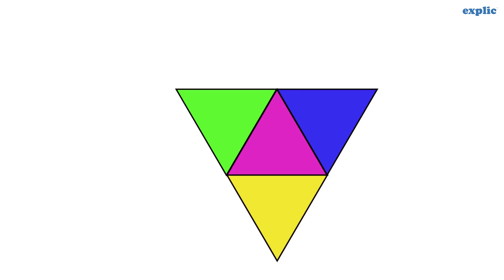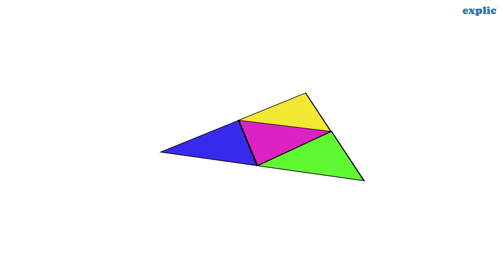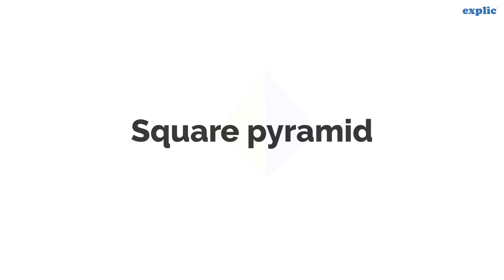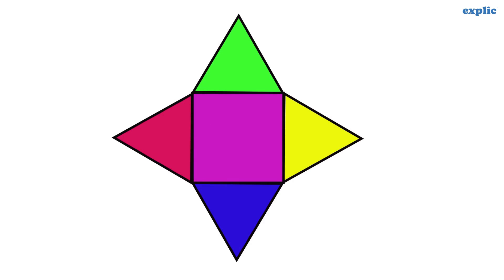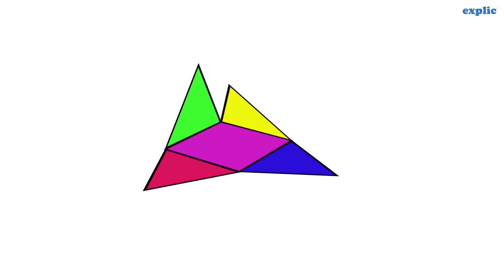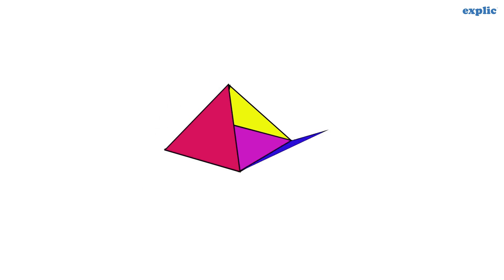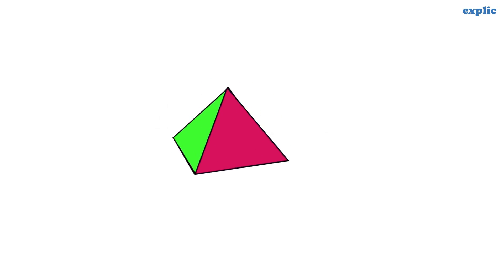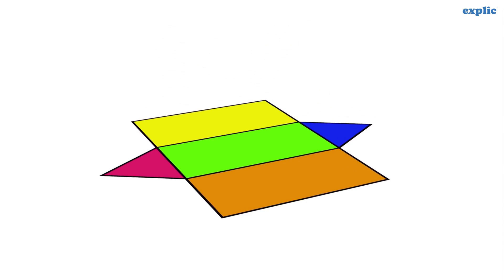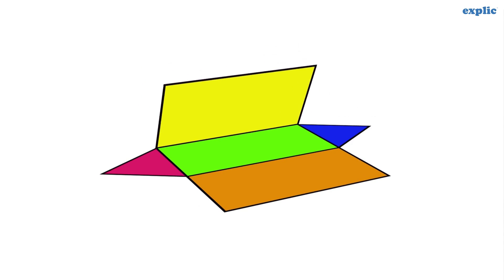A triangular pyramid is made of four equilateral triangles. It is a three dimensional shape that has a triangle as a base and converges to a single point at the top. Unlike a triangular pyramid, a square pyramid is made of one square and four equilateral triangles. A triangular prism is a three dimensional shape made by combining three rectangles and two triangles.